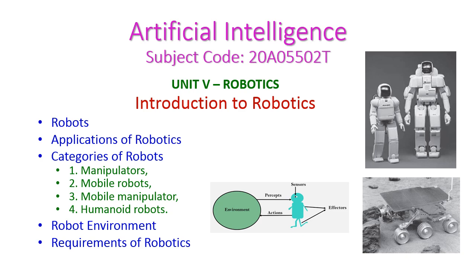In this artificial intelligence class we start our fifth unit: robotics. Under this class we will study what is robotics, the applications of robotics, and the different categories of robots like manipulators, mobile robots, mobile manipulators, and humanoid robots. After that we will see the robot environment and the requirements of robotics.